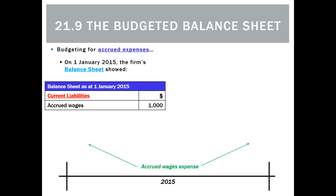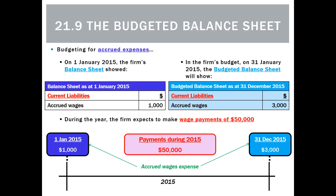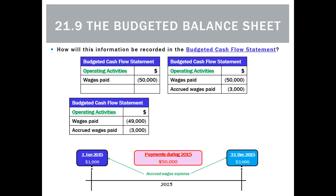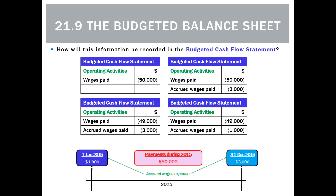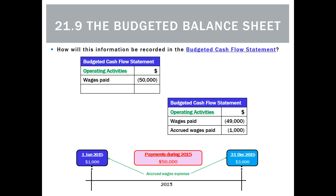Now let's look at an example with accrued expenses. On the 1st of January, the business has accrued wages as a current liability of $1,000. At the end of the period, the budgeted balance sheet shows accrued wages of $3,000. During the year, they expect to make wage payments of $50,000. We need to figure out what goes in the cash flow statement. The options are: wages paid of $50,000; wages paid of $50,000 with accrued wages of $3,000; wages of $49,000 with accrued of $3,000; or wages of $49,000 with accrued of $1,000.